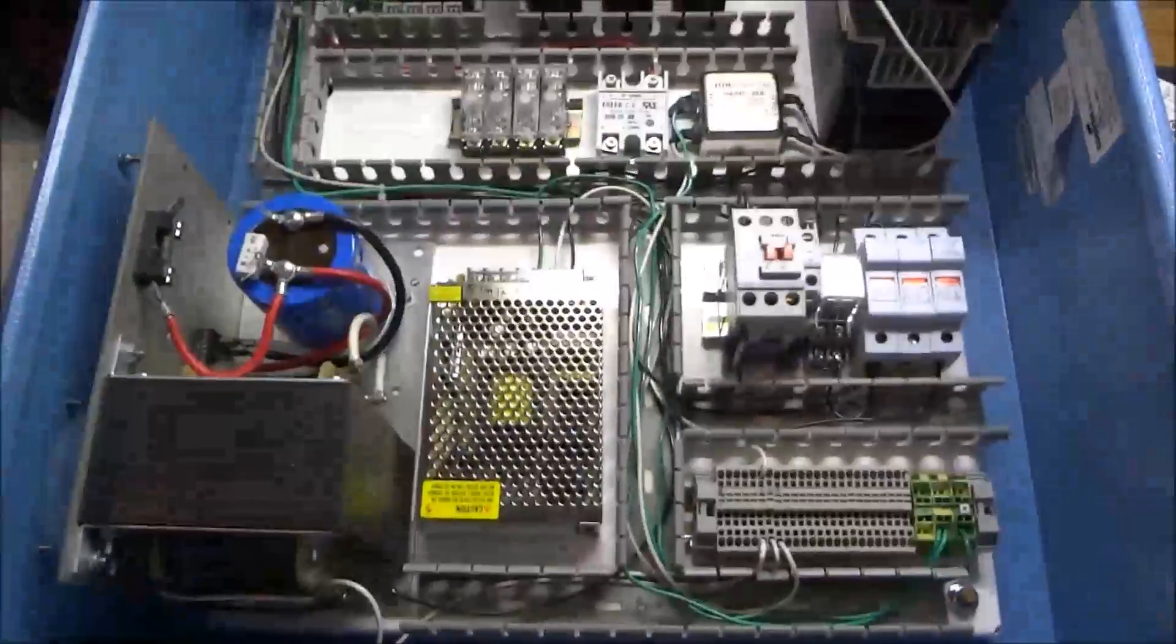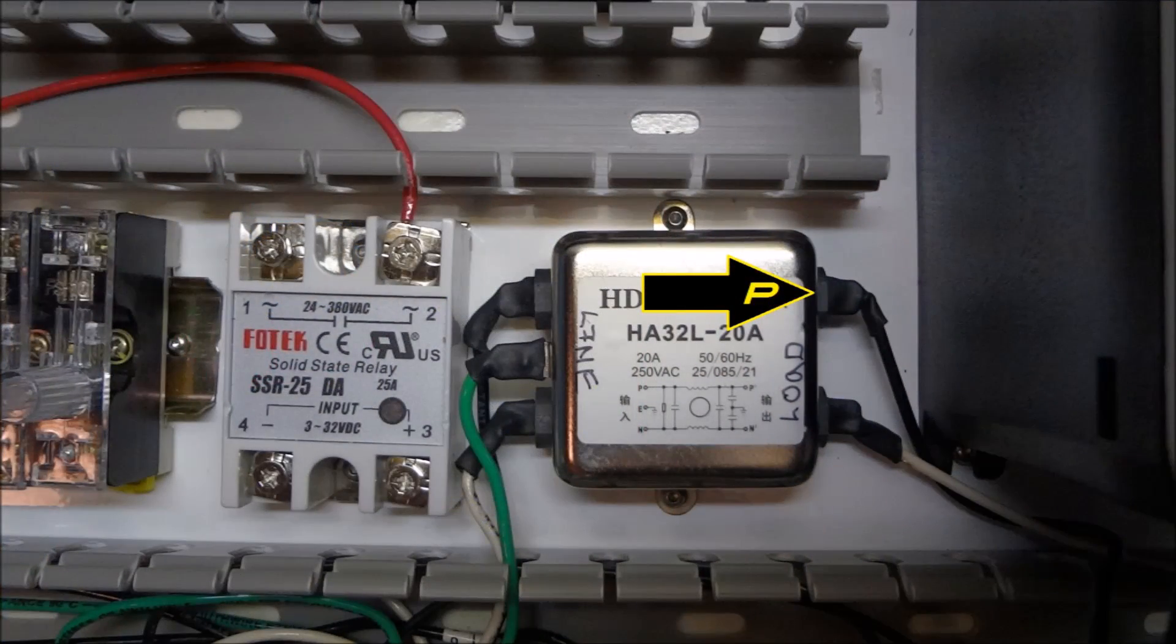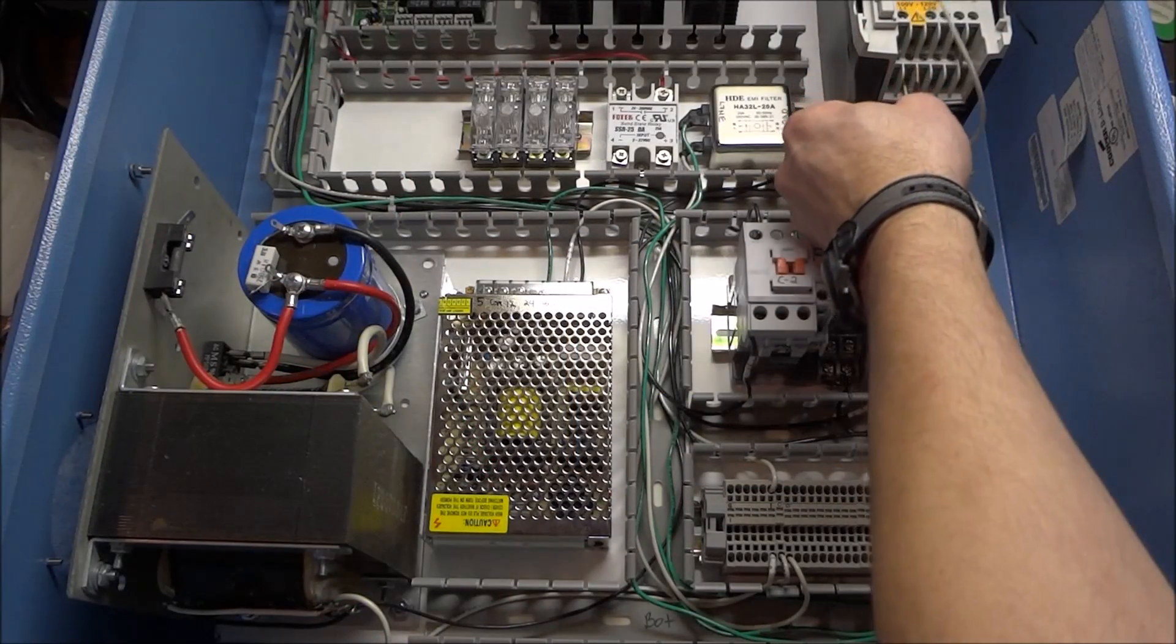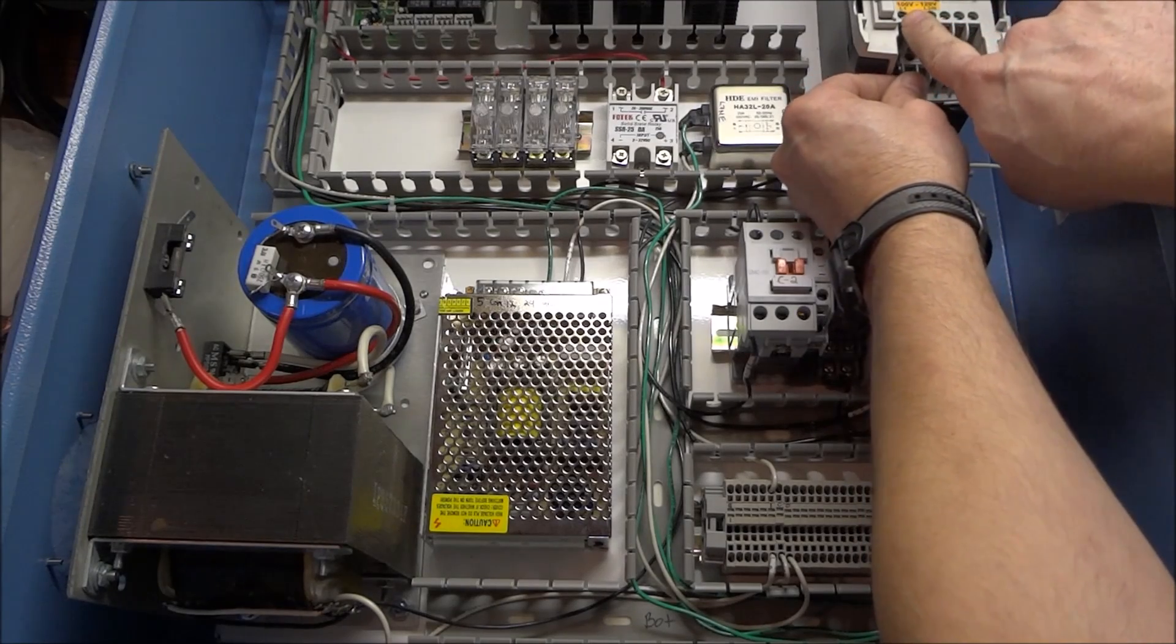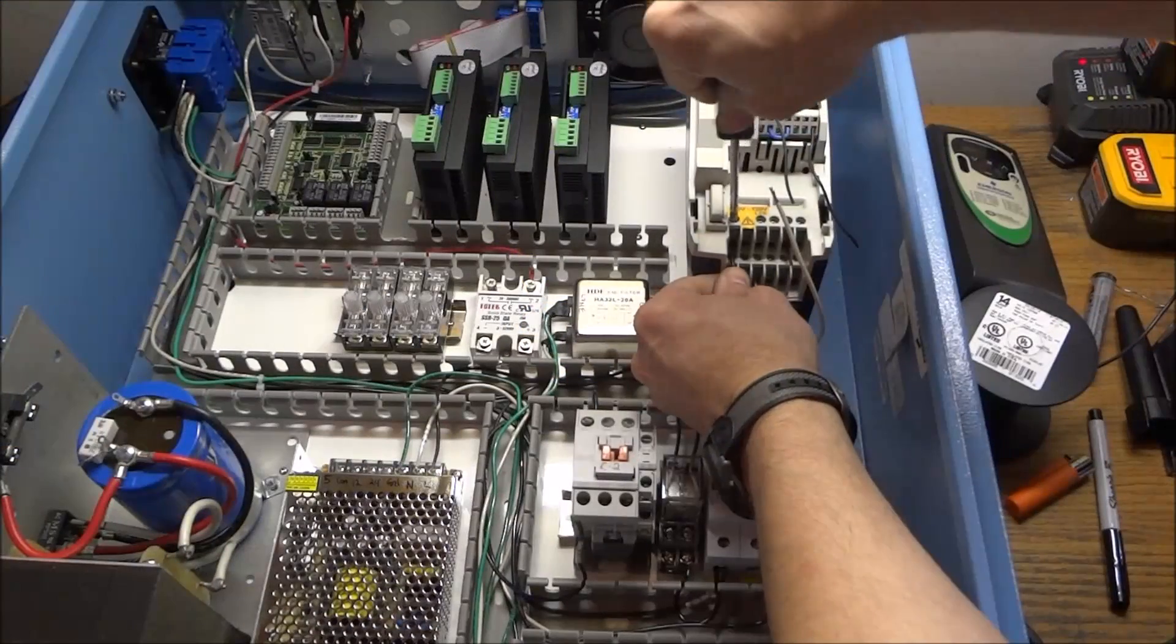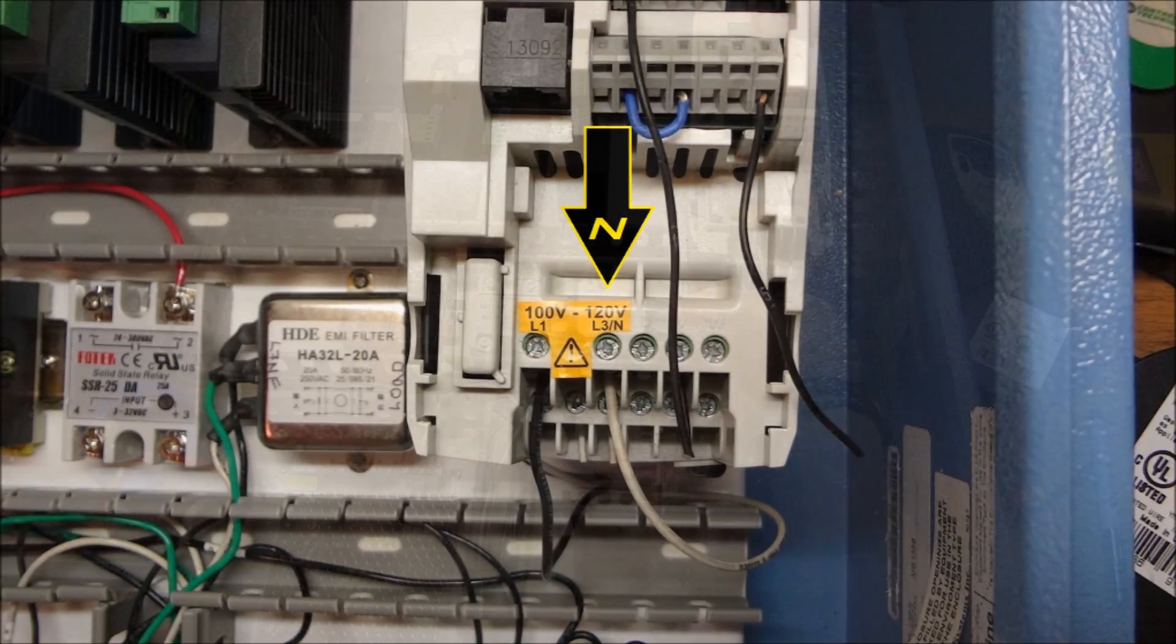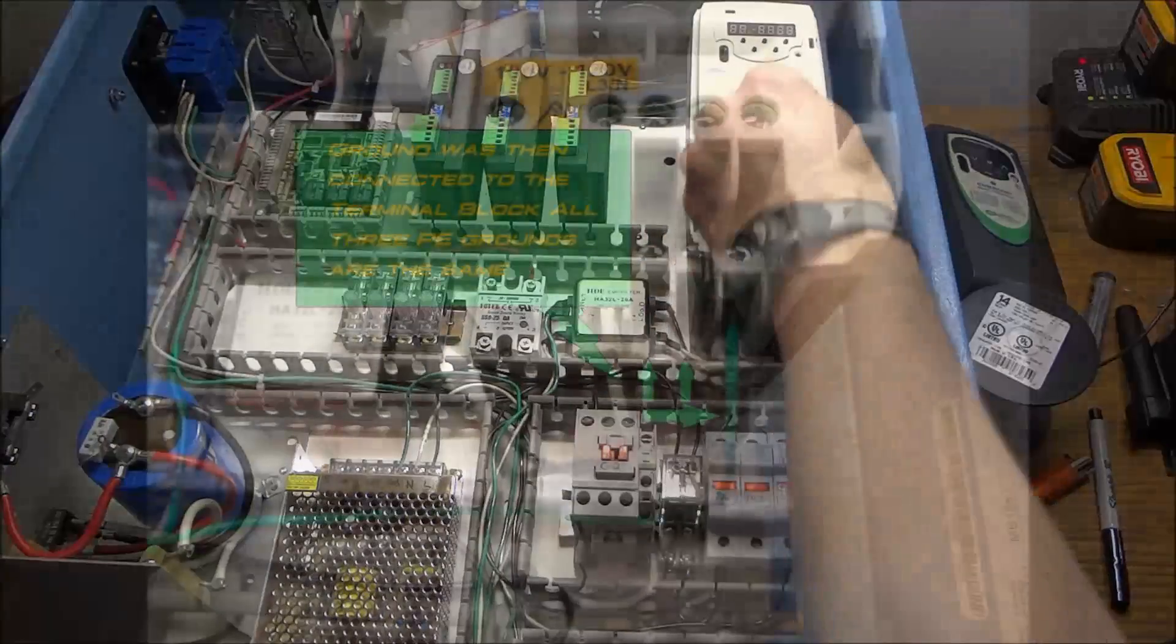And then I went ahead and soldered my connections on the load side. And this is labeled P and N for neutral. And these go over to my VFD. And the VFD is labeled L1 here. We have L1 for our line and L3 or N for our neutral. And we have power going to our VFD.